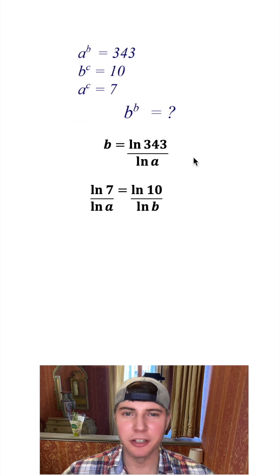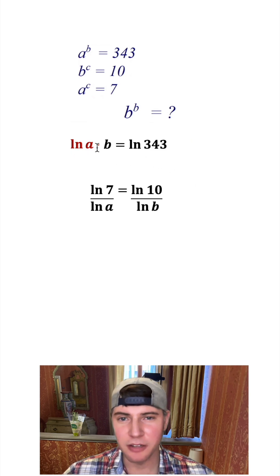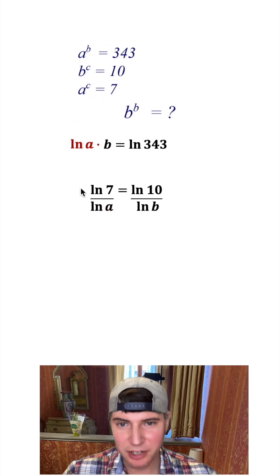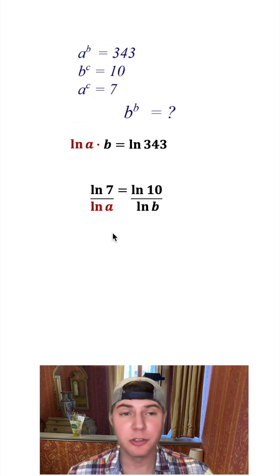And for this one, I think I'm going to undo what I did earlier. I'm going to multiply both sides by natural log of a, get rid of these. So now we have natural log of a times b is equal to natural log 343. So looking at these, I noticed that both of these have a natural log of a, so I want to get this natural log of a alone on one side so I can substitute it.